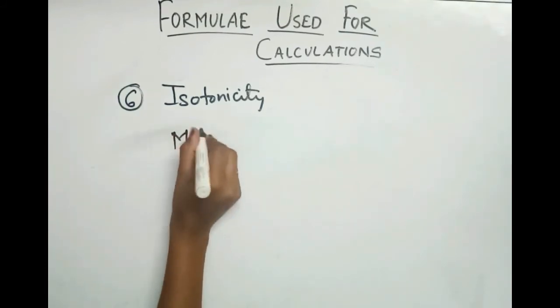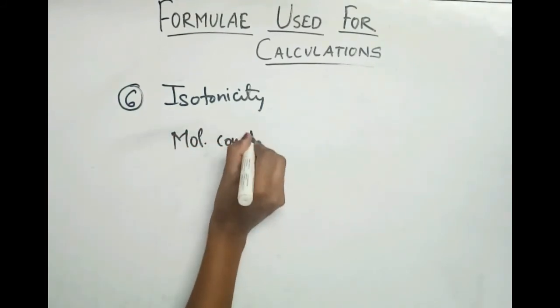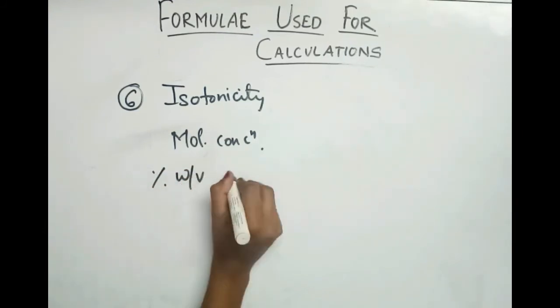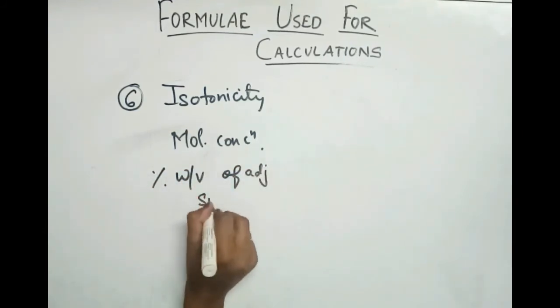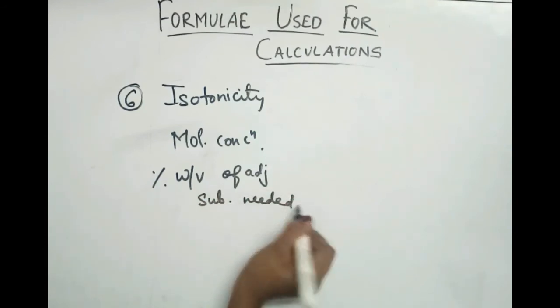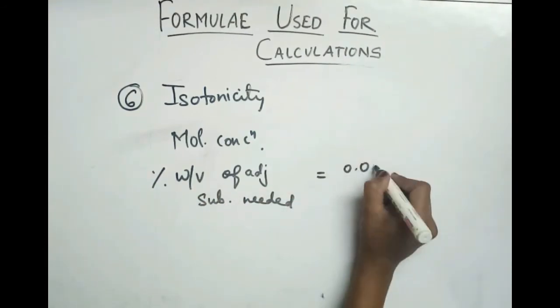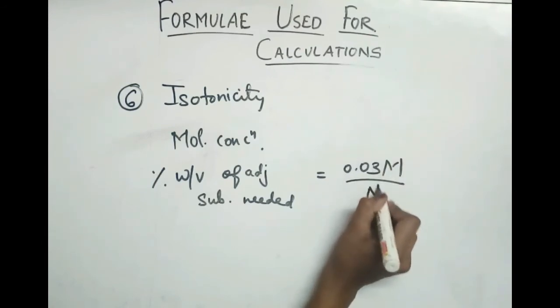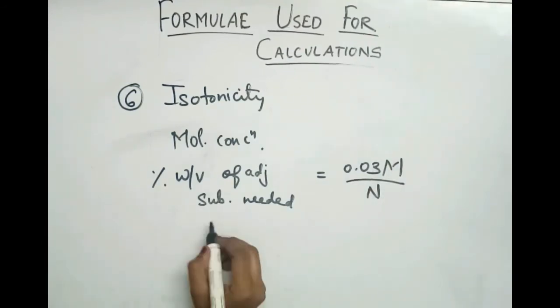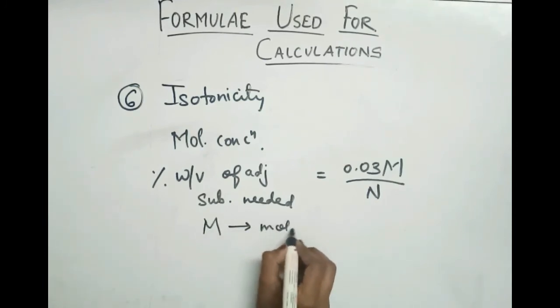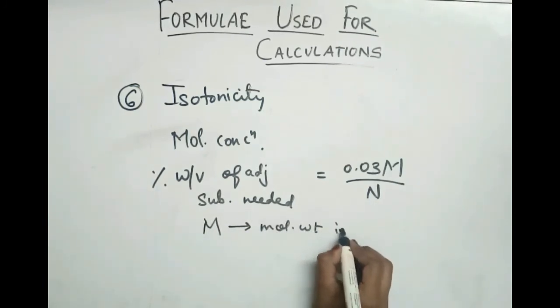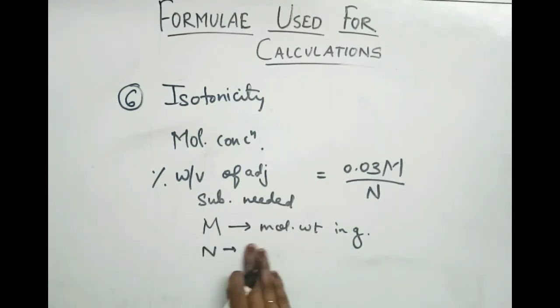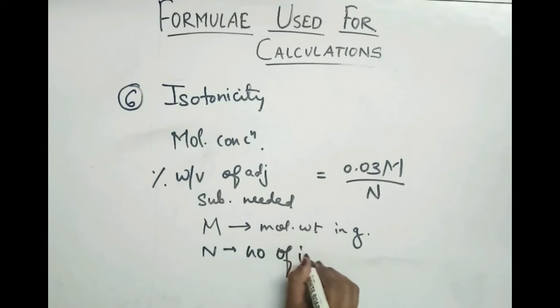Next is based on molecular concentration. The formula is: percent weight by volume of adjusting substance needed equals 0.03m divided by n. M is molecular weight in grams. N is number of ions dissociated or ionized.